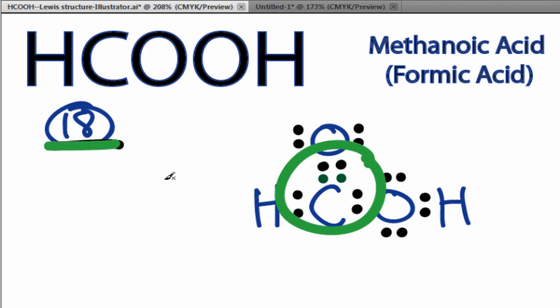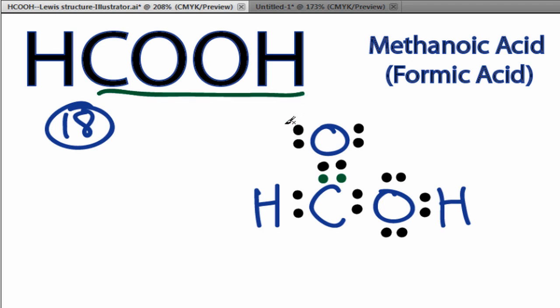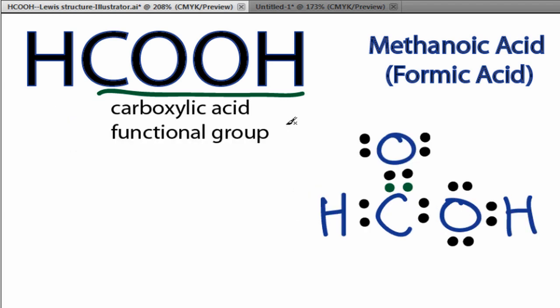So we've used 18 valence electrons, and we have full outer shells for all the atoms in the HCOOH Lewis structure. So this is the correct Lewis structure for HCOOH. One last thing to note, though, whenever you see COOH written like that, that's going to be called a carboxylic acid functional group. You'll see it quite often when you're studying organic chemistry. It's a very important group.